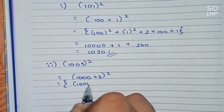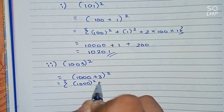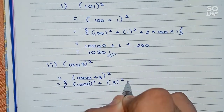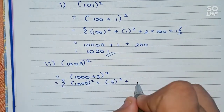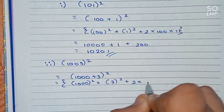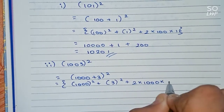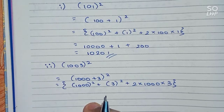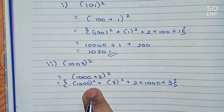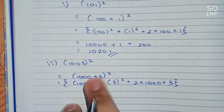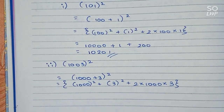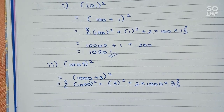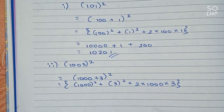Applying the (a + b)² formula: a² = 1000², plus b² = 3², plus 2ab = 2 × 1000 × 3. So we have 1000² + 3² + 2 × 1000 × 3.